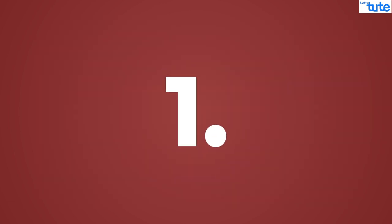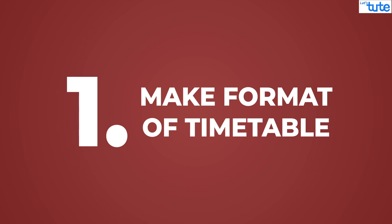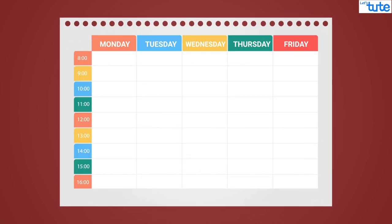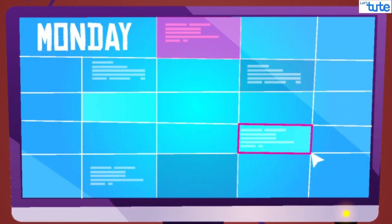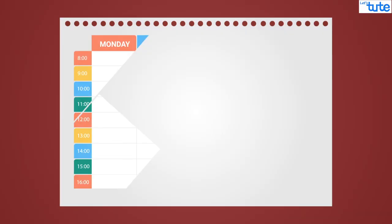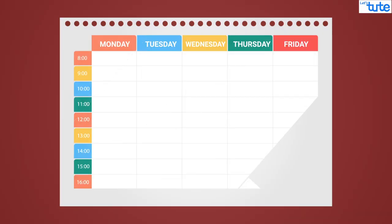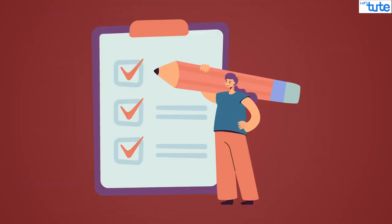Point number one: make a format of timetable. Take a piece of paper and attractively prepare a proper format for the timetable. There are many tools online which can help you prepare the format, but we recommend you to draw the format on paper using the old spreadsheet method. Drawing your timetable and writing stuff will help you to remember things.